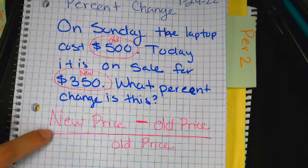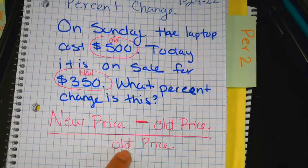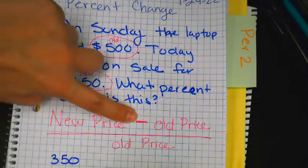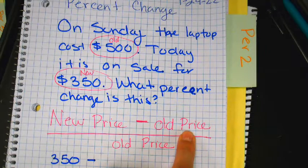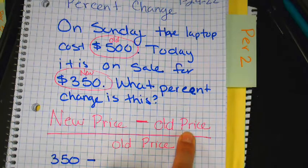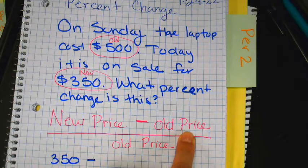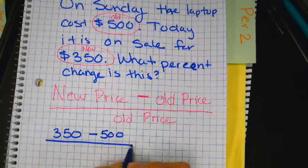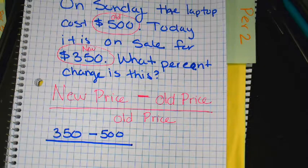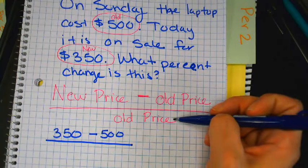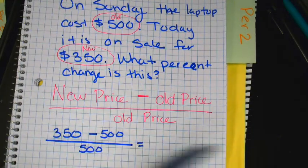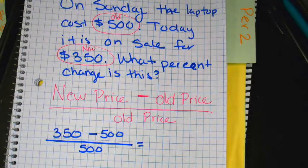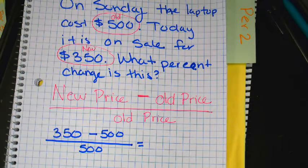Now, let's use our formula. New price minus old price divided by old price. So, what's the new price? $350 minus my old price of? Good. Let's write this down. We shouldn't be anywhere near our phones. So, what is the bottom number? $500, our old price.